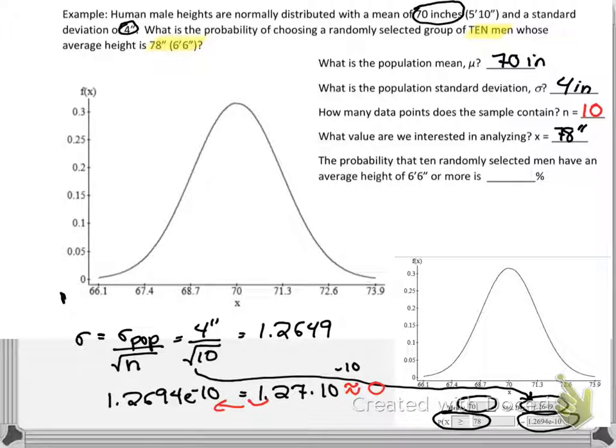And the key here, of course, is using choosing a randomly selected group, which means that every male on the face of the earth has an equal likelihood of being put into this group. So we're not going to the NBA playoffs and picking a group of 10 men. We're not going to the big and tall store and picking a random group of 10 men there. We're giving every human being, sorry, every male human being on this planet an equal chance of being chosen. And when we do that, we find the probability of them having an average height of six feet, six inches, six and a half feet is basically zero.